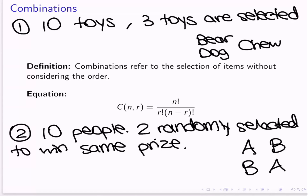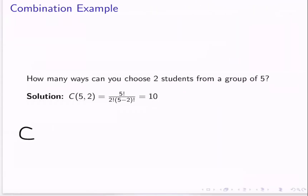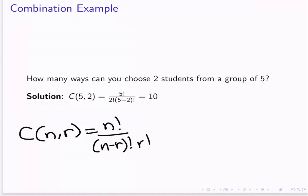So next I'm going to go over another example using our combinations equation. It says: how many ways can you choose two students from a group of five? In this case, we're not choosing two students and then arranging them — we're just choosing two students. So regardless of what order those students are selected in, it doesn't make a difference. If we select Andrea and Bob, or Bob and then Andrea, that's counted as the same combination, so we should use combinations.